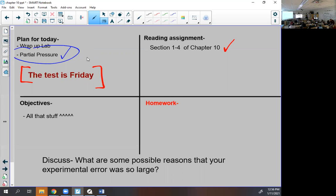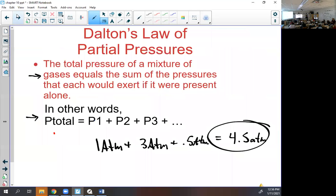Partial pressure is really important. There's one part that's super confusing to almost every teenager ever. It's not hard math, you just got to believe it. Dalton's law of partial pressures says the total pressure of a mixture of gases equals the sum of the pressures that each would exert if it were present alone. That's a complicated way of saying you just take each one's pressure and add it up, and that will tell you the total pressure overall.